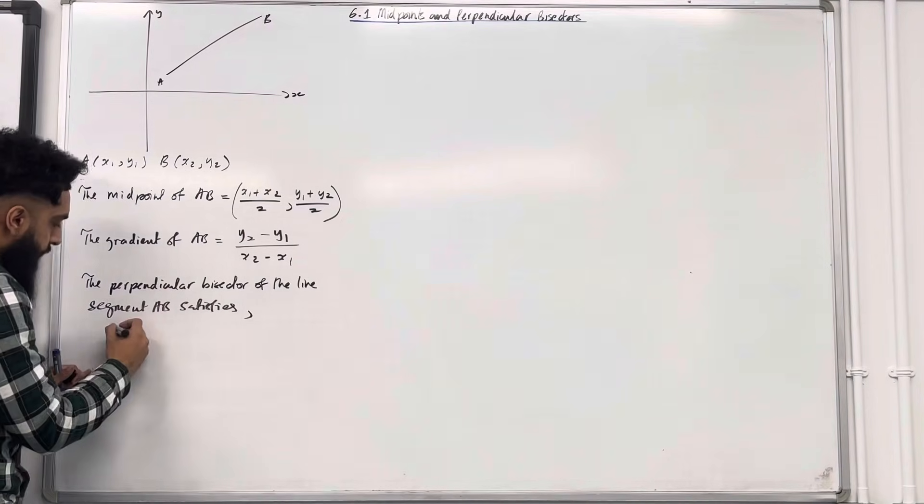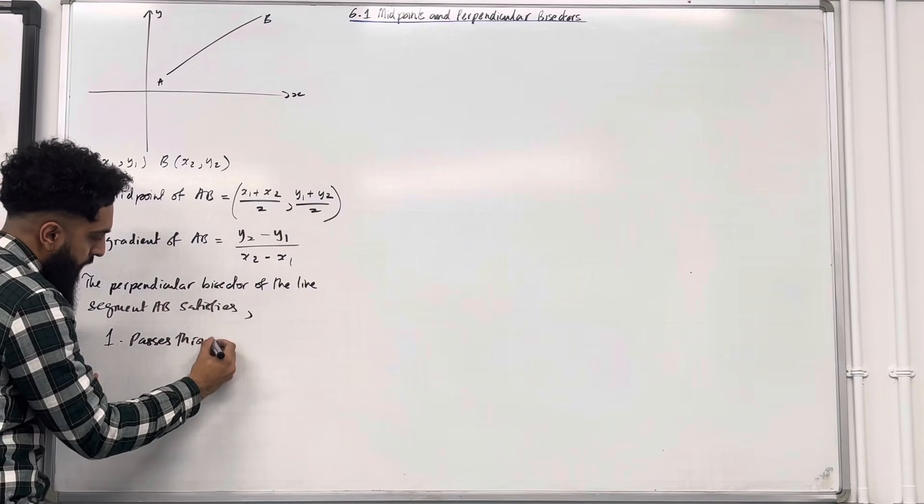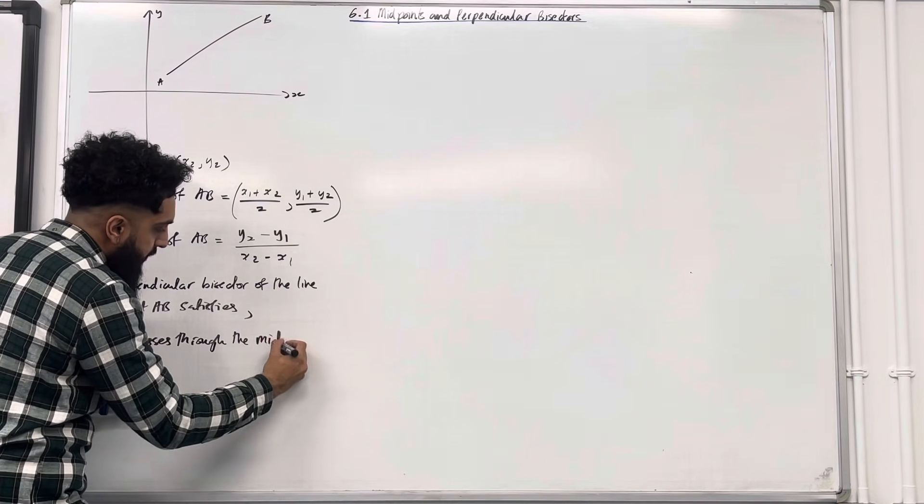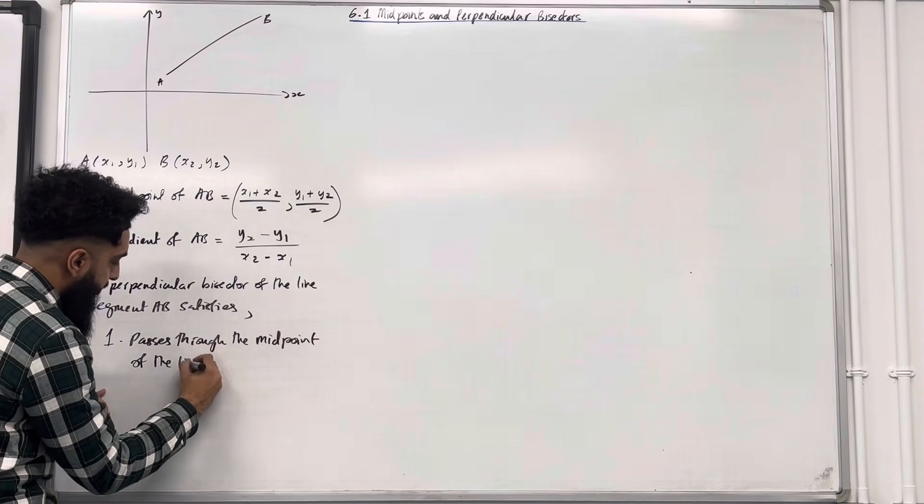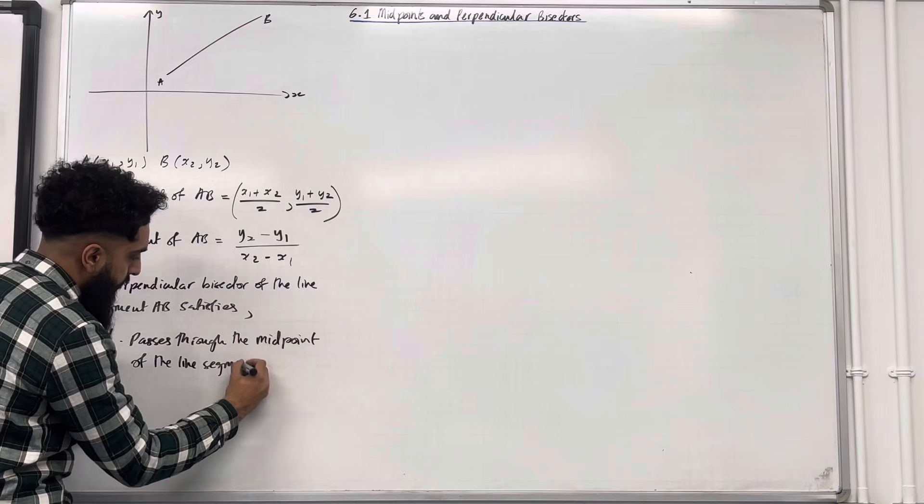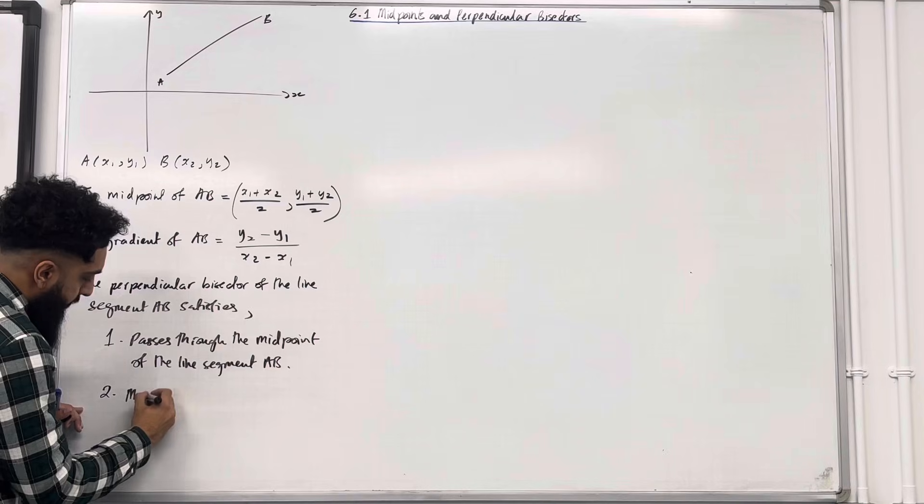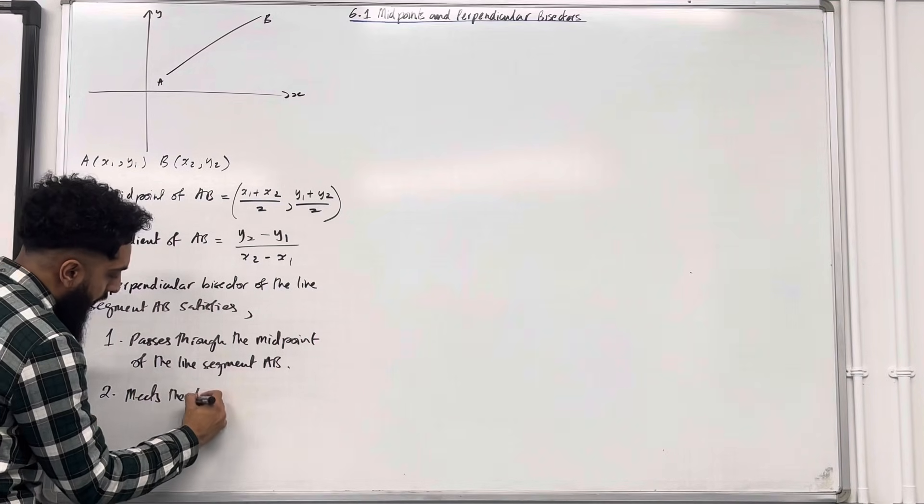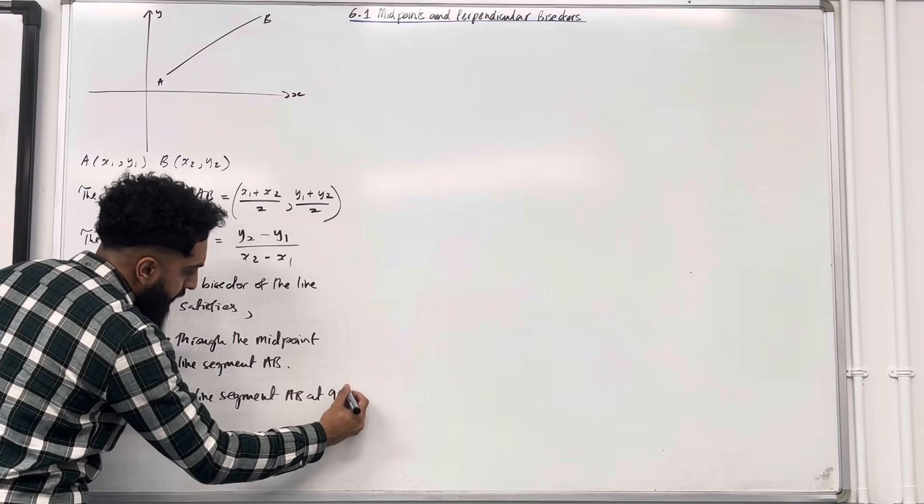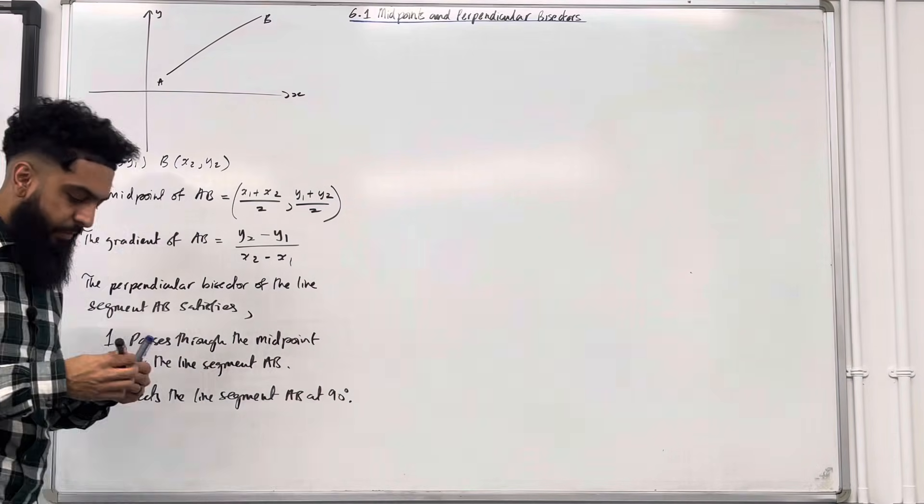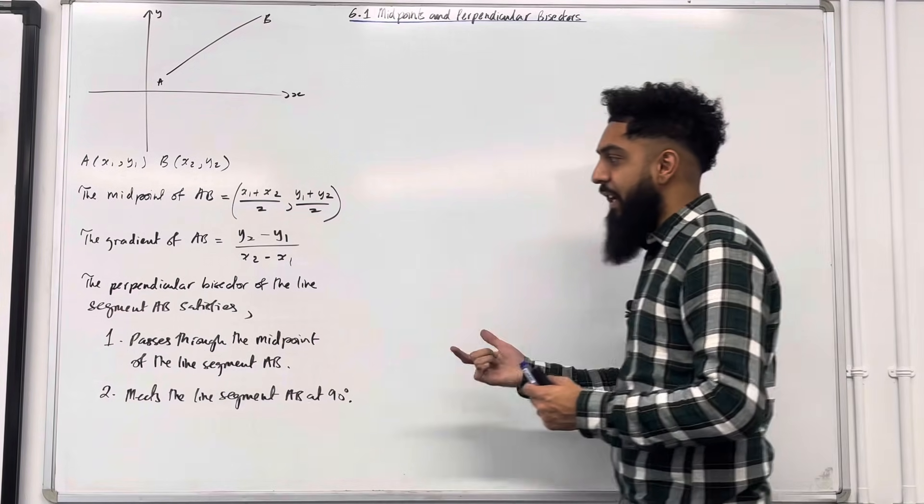Number 1, passes through the midpoint of the line segment A to B. And number 2, meets the line segment A to B at 90 degrees. That was the definition of a perpendicular bisector to the line segment A to B.